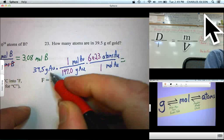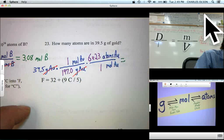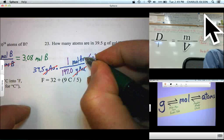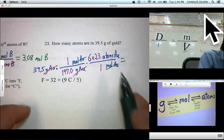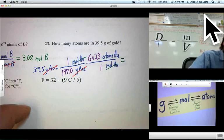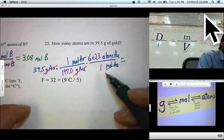Oh, let's cancel our units. Grams of gold over grams of gold cancels. Moles of gold over moles of gold cancels. We're left with atoms of gold. That's called respecting our units. And let's write the answer.